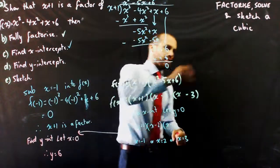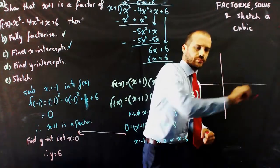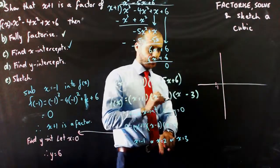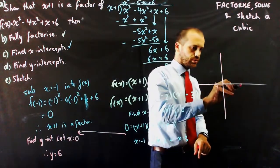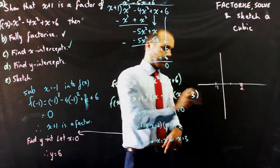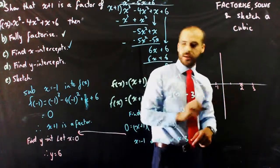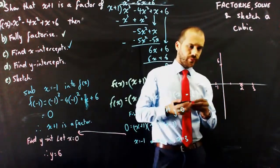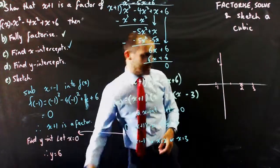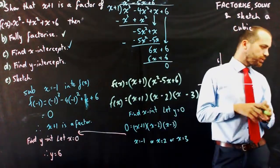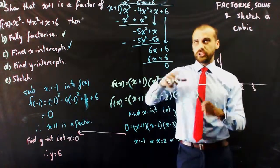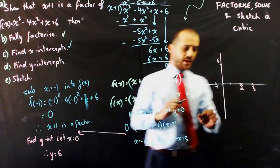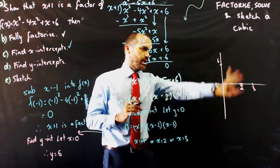So it has x intercepts at negative 1, 2, and 2 here at 2, and 3. It has a y intercept at positive 6. And it is a cubic function, which we haven't spent a lot of time talking about. But a cubic function has a shape that looks something like that. And so now I just need to join up my dots.